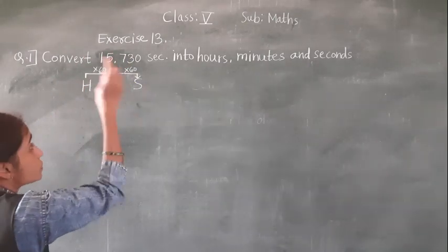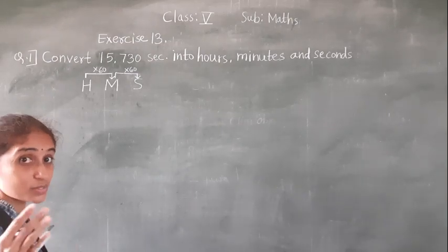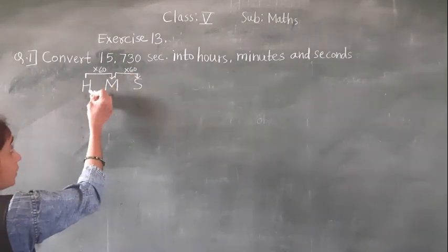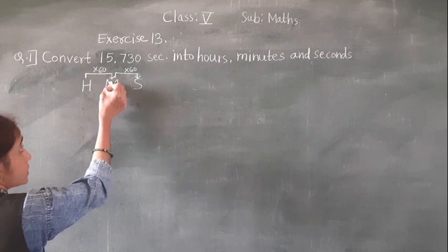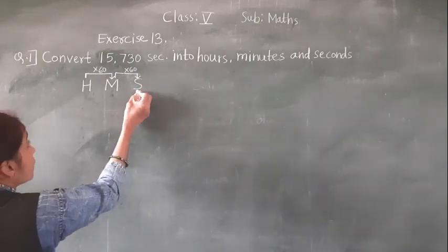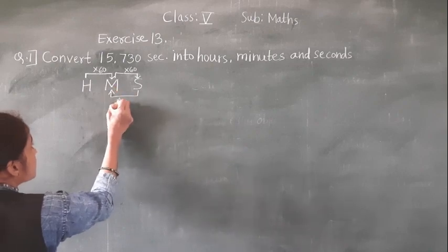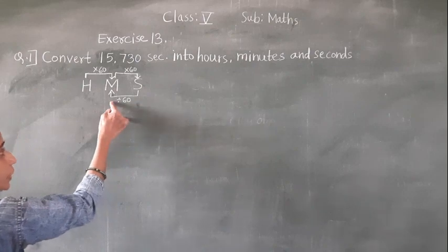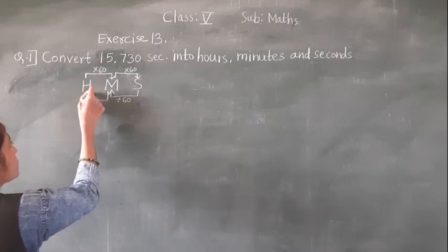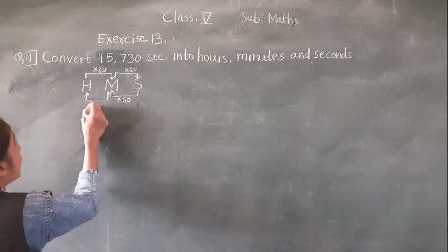Suppose I want to convert hours into seconds directly. Hours into seconds is 60 × 60 — two steps. 60 × 60 = 3,600, so we have to multiply by 3,600. Convert hours into minutes: multiply by 60. Minutes into seconds: multiply by 60. Convert seconds into minutes: divide by 60. Convert minutes into hours: divide by 60.